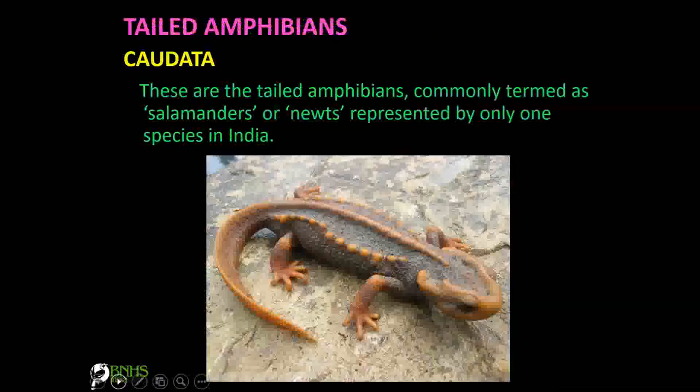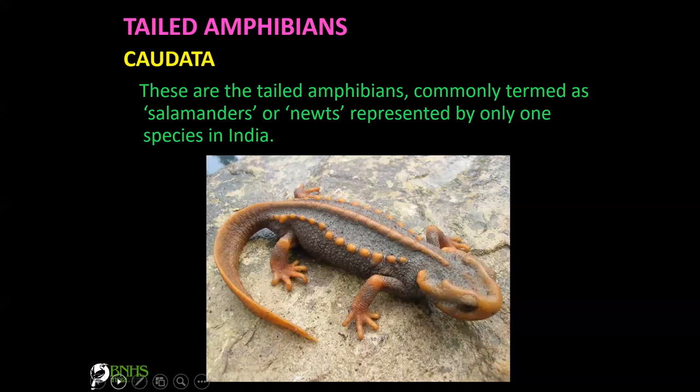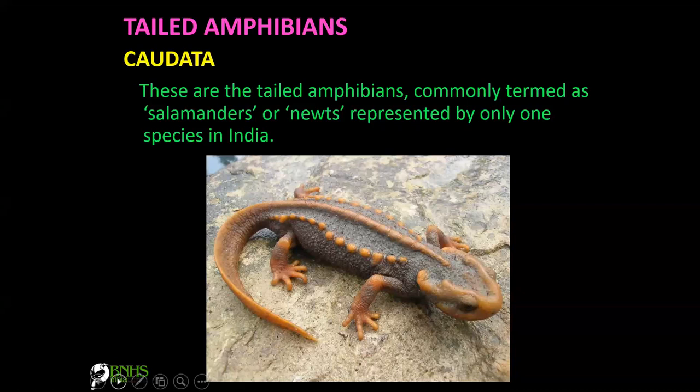We have only one tailed amphibian in India — the Malabar mud salamander — and there is no other salamander species here.